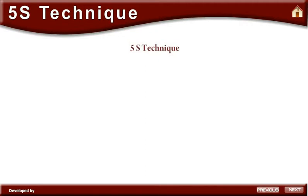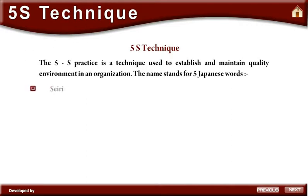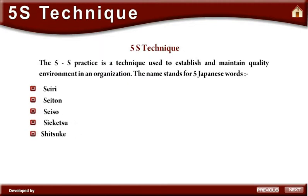5S Technique. The 5S Practice is a technique used to establish and maintain a quality environment in an organization. The name stands for five Japanese words: Seiri, Seiton, Seiso, Seiketsu, and Shitsuke.